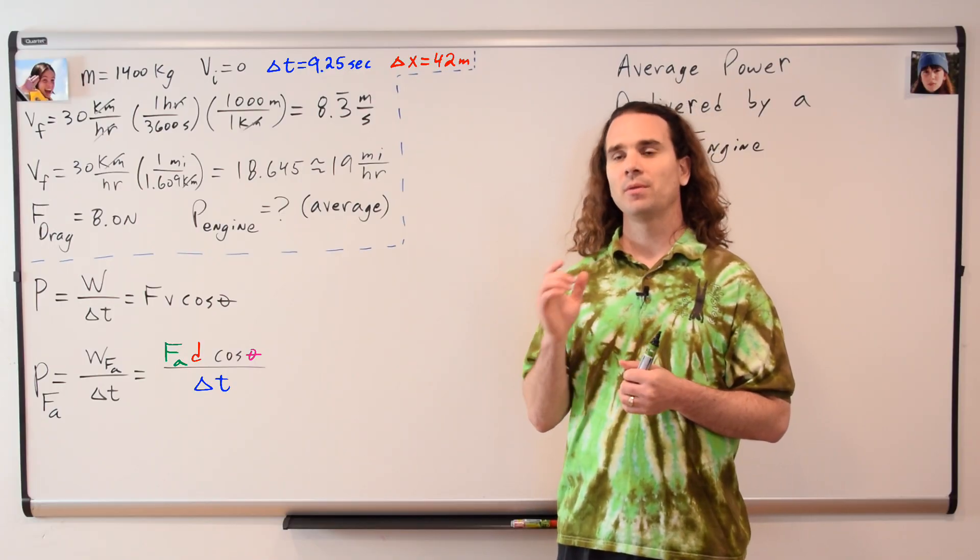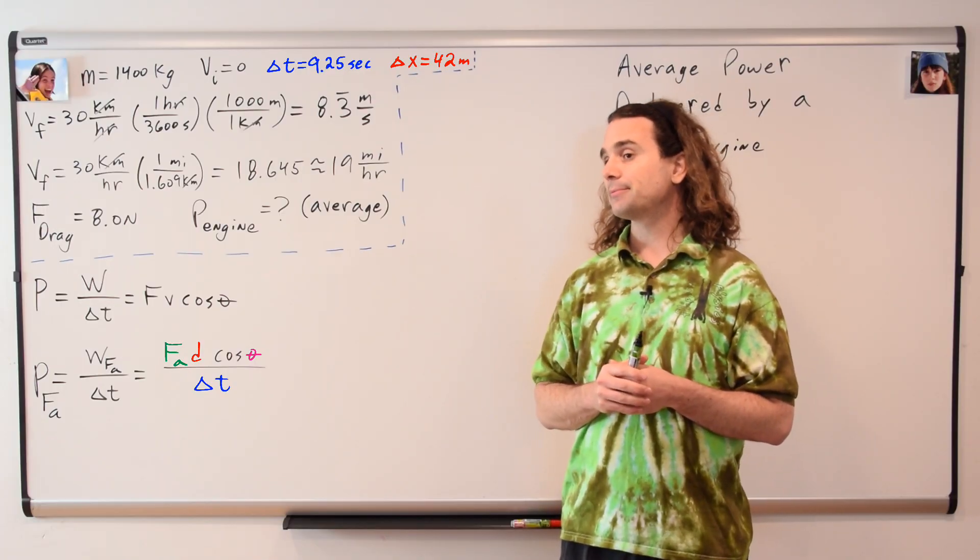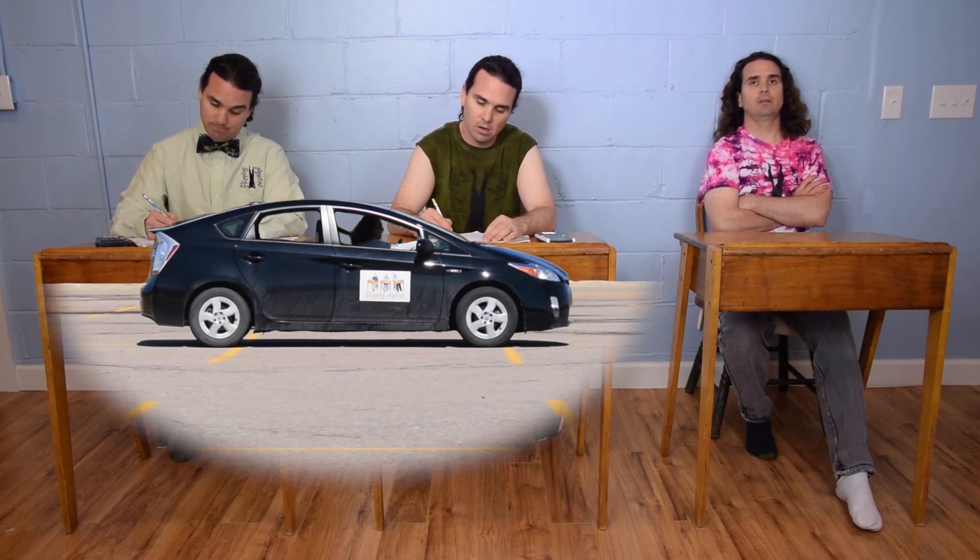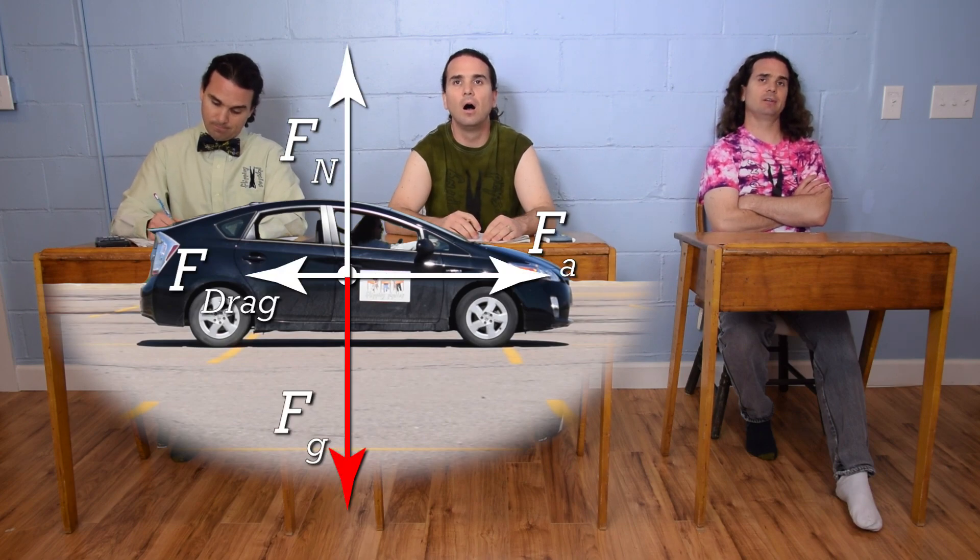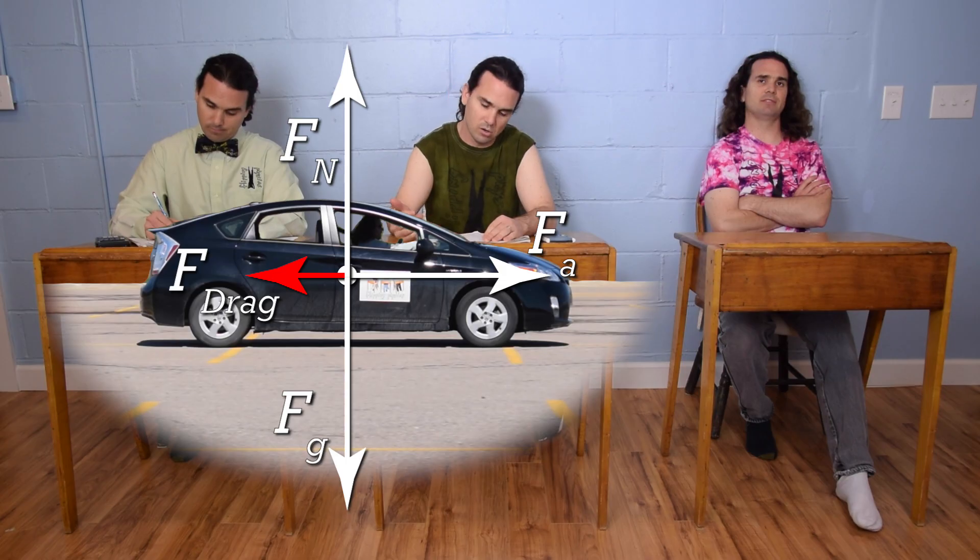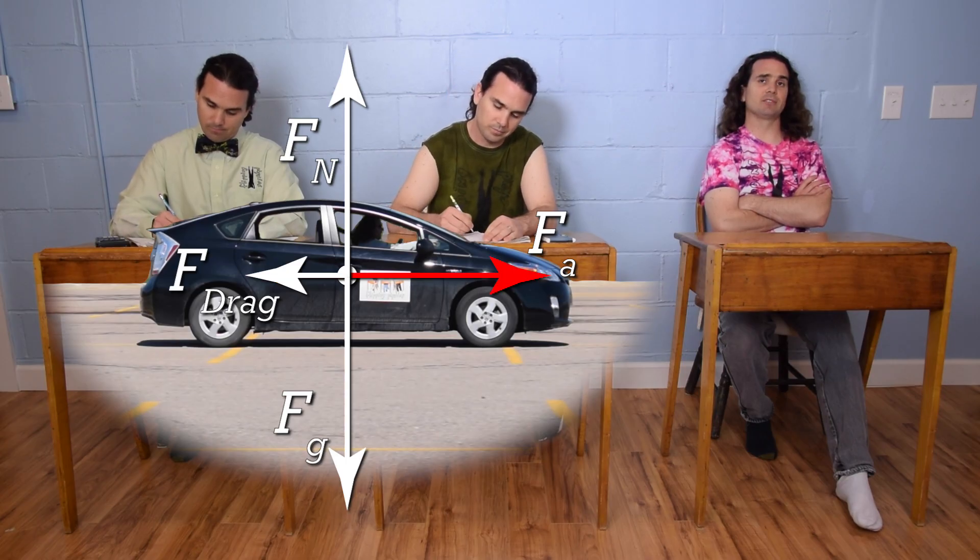Bo, what should we do next? Let's draw the free body diagram. Absolutely right, Bo. Why don't you do so, please? The force of gravity is down, the force normal is up, the drag force is to the left, and the force applied is to the right.